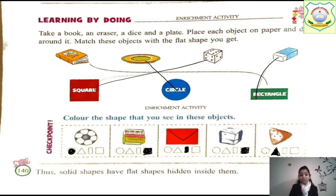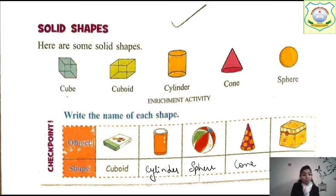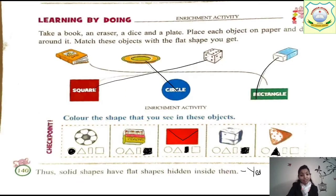Do solid shapes have flat shapes hidden inside them? Yes! If you look at a cube, what does it resemble? A square. And a cuboid — what does it resemble? Rectangle. Cone resembles a triangle a little. Sphere resembles a circle. And cylinder — it is somewhat similar to a rectangle, not exactly the same, but it resembles it. So yes, solid shapes do resemble flat shapes.